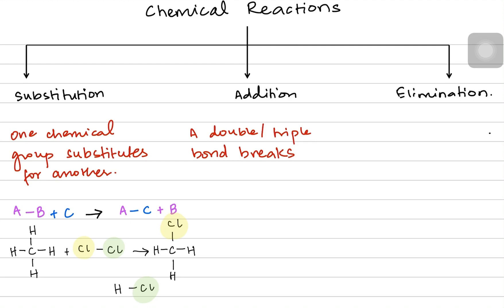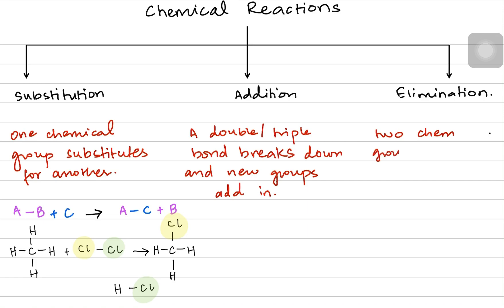In an addition reaction, a double or triple bond breaks down. This isn't limited to carbon-carbon bonds — double or triple bonds can also exist between oxygen atoms, between oxygen and carbon, or between carbon and nitrogen. When the bond breaks, new groups are added into the main molecule. In an elimination reaction, the opposite happens: two chemical groups leave the molecule and a double or triple bond is formed.